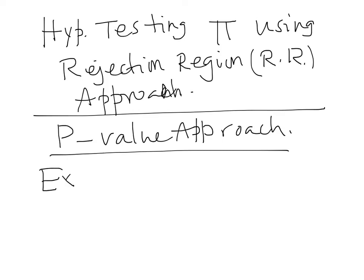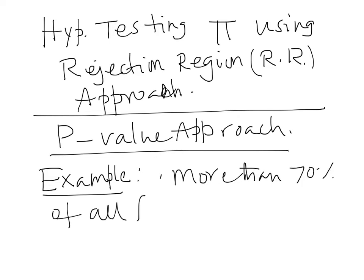Recall the example. We considered the statement was more than 70% of all faults due to transmission line caused by lightning.